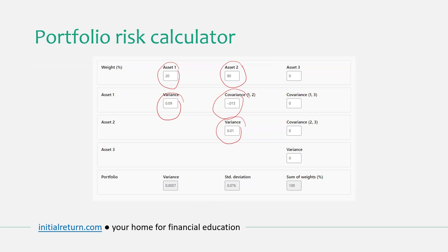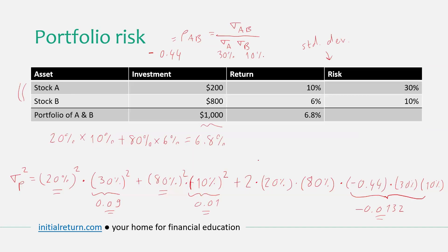Once I put all the figures in, I can see the portfolio variance, and taking the square root gives a standard deviation — or portfolio risk — of 0.076, or 7.6%. So this portfolio has a return of 6.8% and a volatility of 7.6%. This is the portfolio risk.